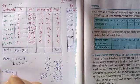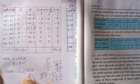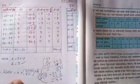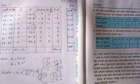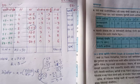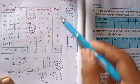Therefore, the formula is: mean = A plus (summation of fi·ui divided by summation of fi) into h. This is the formula. If you want to use this, you can read it for the first word. If you want to use fi·ui, you need to use fi·ui.